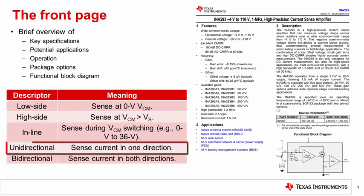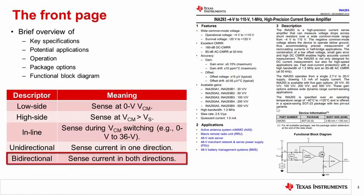A unidirectional device is one that can only sense current flowing in one direction, while a bidirectional current sense amplifier can sense current flowing in both directions across the shunt resistor. Analog bidirectional amplifiers will most always have a reference pin that allows the output voltage to be offset, usually to mid-supply.